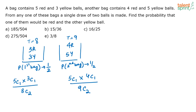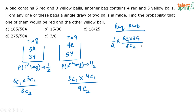The required probability combines both cases. First, you select the bag — then pick the balls. Selecting bag one and getting one red and one yellow, or selecting bag two and getting one red and one yellow. The formula is: (1/2 × 5C1×3C1/8C2) + (1/2 × 4C1×5C1/9C2). Here 'and' means multiplication and 'or' means addition.